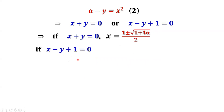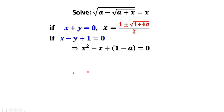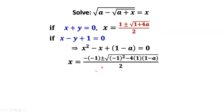If the second result is true — solving this equation for y values gives y equals x plus 1. In the second result, replacing y by x plus 1, we have a minus x plus 1 equals x squared. Simplifying: x squared minus x plus 1 minus a equals 0. Using the quadratic formula again, we get the third and the fourth result for x.